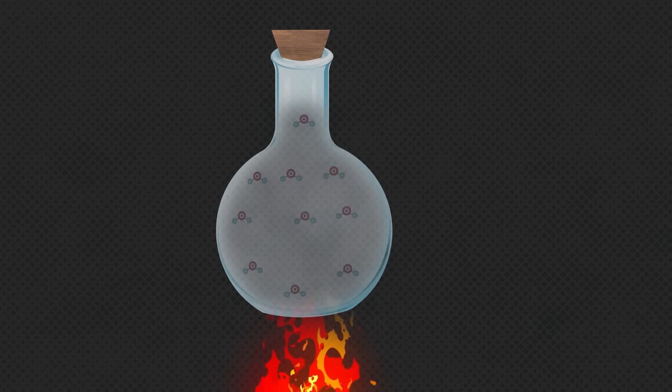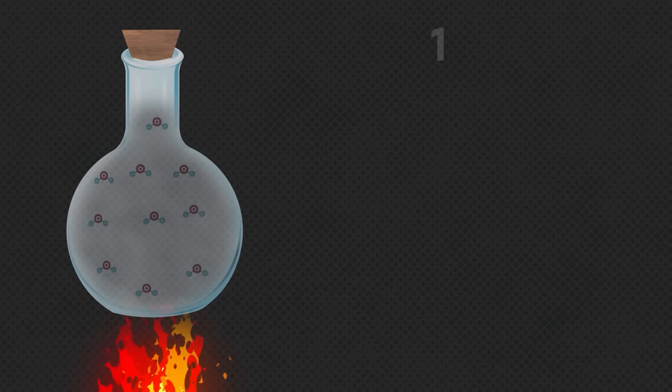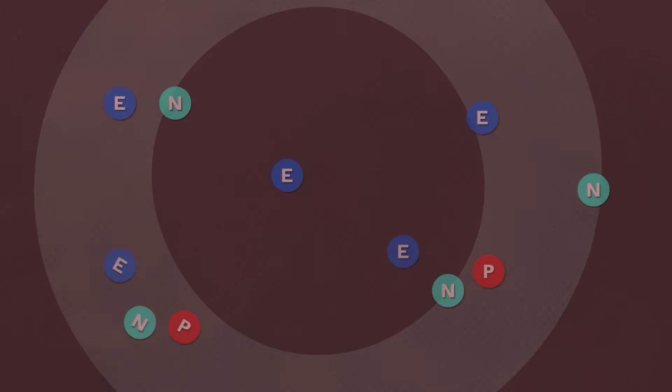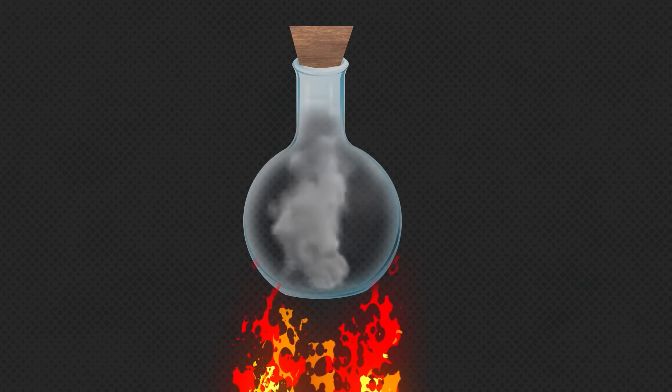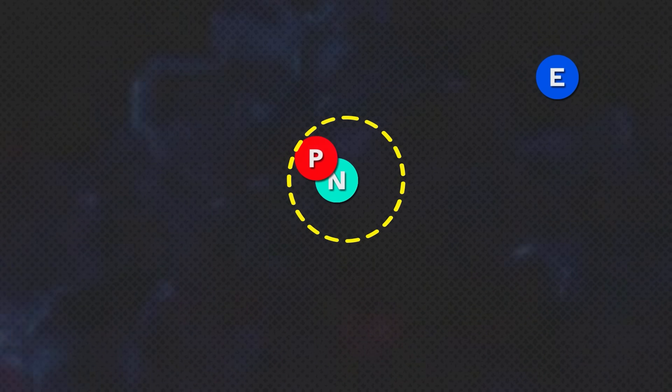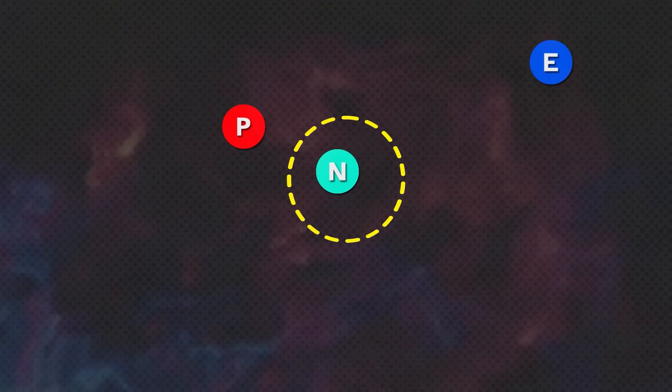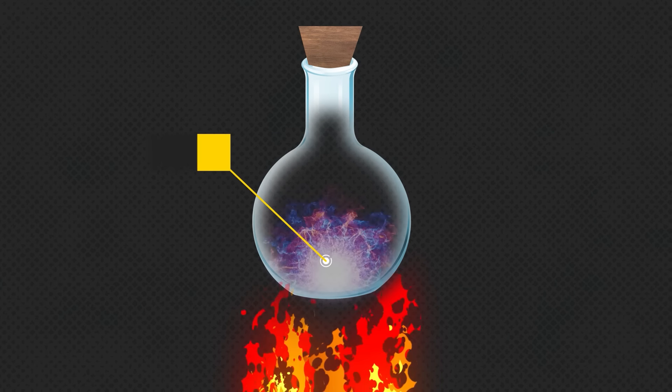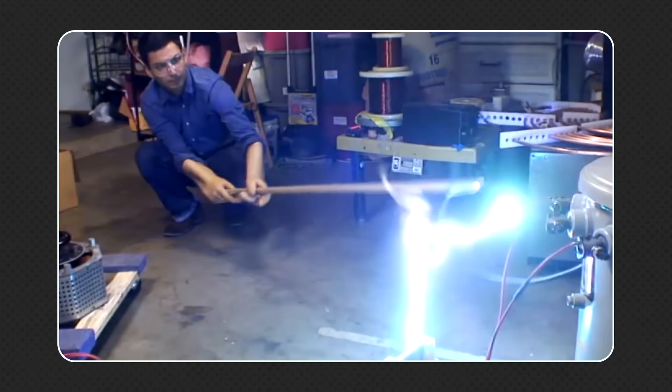तो चलो, अब इस entropy को और भी ज़्यादा increase करते हैं। What if gaseous state में convert होने के बाद भी हम continuously उस particular matter को heat करते रहें? Well, ऐसा एक experiment 1879 में William Crookes ने किया था, और उनकी इस experiment ने दुनिया के सामने पेश किया plasma — the fourth state of matter। उन्होंने gases को इतना ज़्यादा heat किया कि extra energy की वजह से gas के atoms इतने energetic हो गए कि उन्होंने अपने orbit में घूम रहे electrons को ही eject कर दिया। यहाँ तक कि nucleus में मौजूद protons और neutrons भी एक दूसरे से अलग हो गए। इससे protons, neutrons और free electrons का एक highly excited and extremely energetic soup form हुआ, which is nothing but plasma।